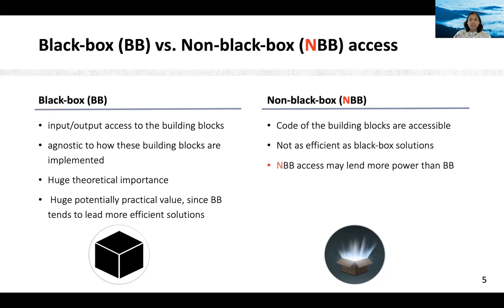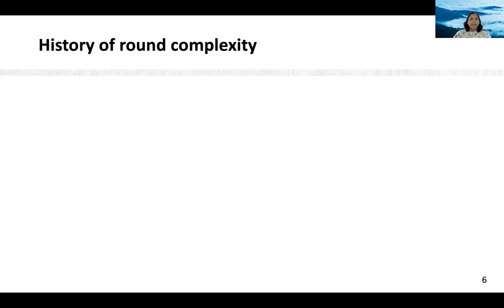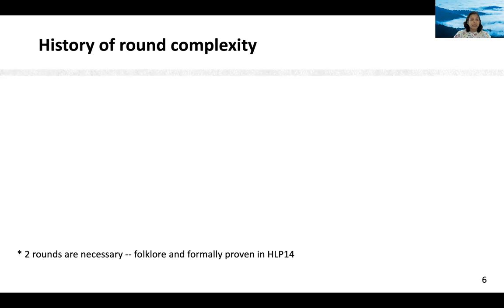I will state one such result in the very next slide. Based on the importance of black box access, we are interested in the black box round complexity of MPC. Now a bit of history of round complexity relevant to our work. There is a huge body of work in terms of the round complexity of dishonest majority protocols. Let me go over the ones that are milestones and most relevant to our work, restricting ourselves to the most primitive setting of semi-honest adversaries. It is known that two rounds are necessary for MPC irrespective of the number of parties and number of corruptions.